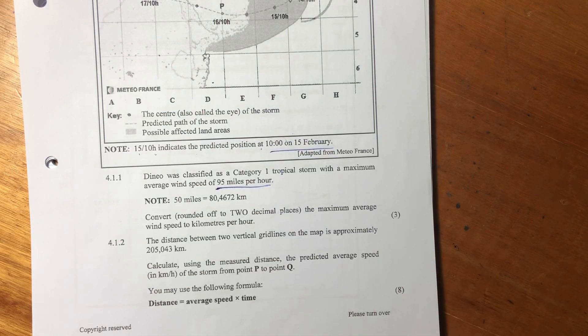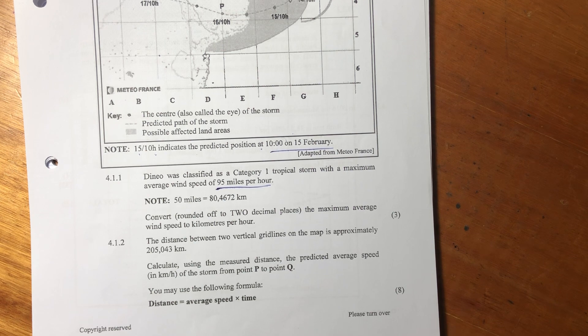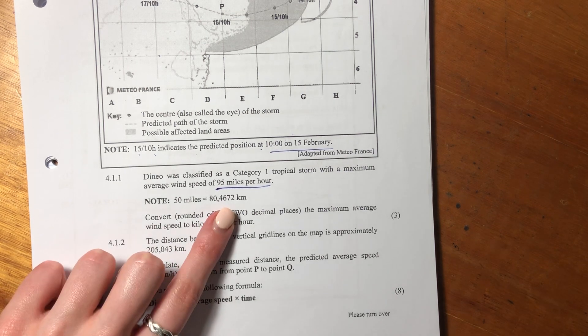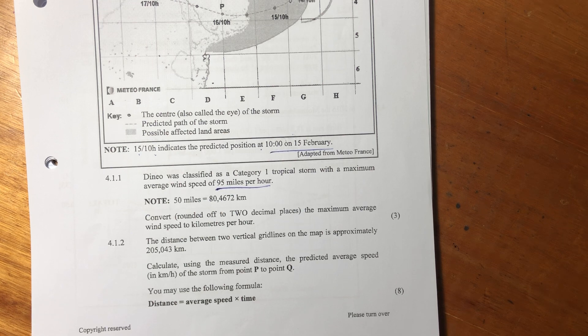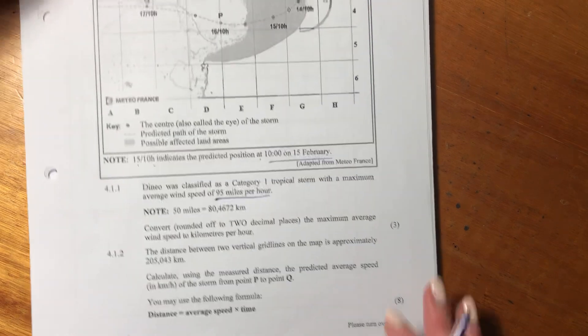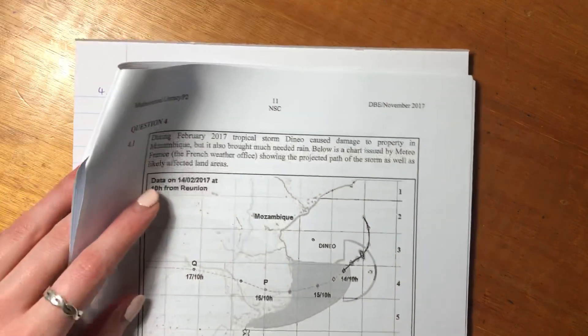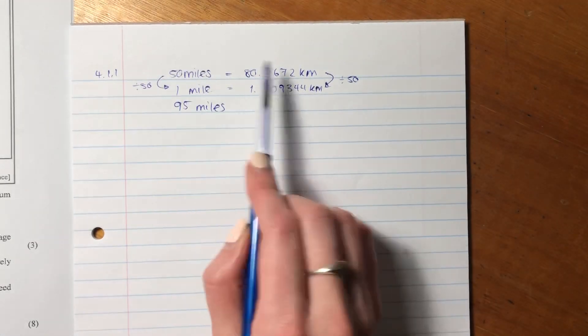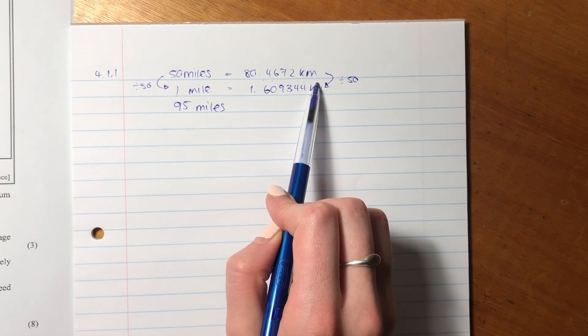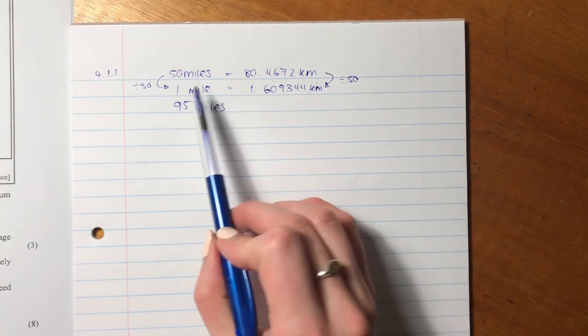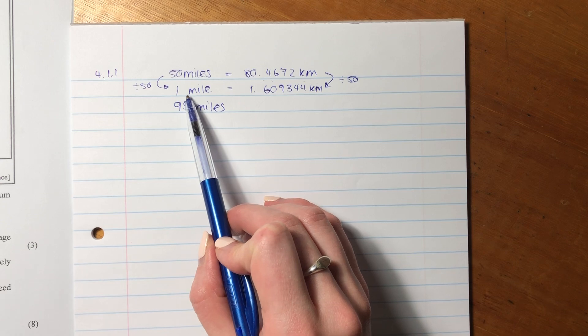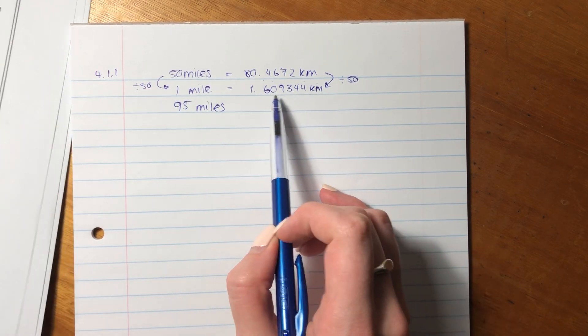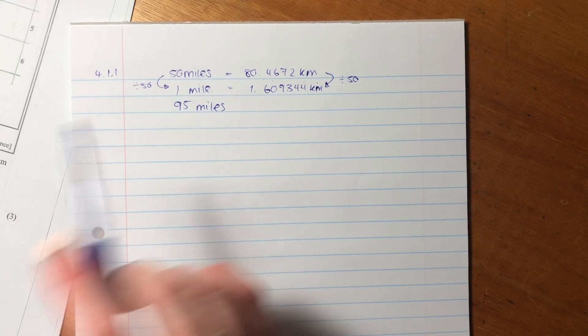So it says Deneo is classified as a Category 1 tropical storm with a maximum average wind speed of 95 miles per hour. They say 50 miles equals 80.4672 kilometers. Then it says convert, rounded off to two decimal places, the maximum average wind speed to kilometers per hour. So what we're going to do is we're going to say, 50 miles equals 80.4672 kilometers. That's effectively a ratio. So let's just make it a little bit more simplified for ourselves and make it one mile to kilometers.